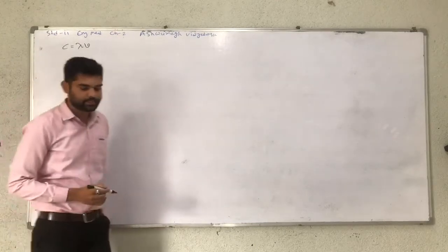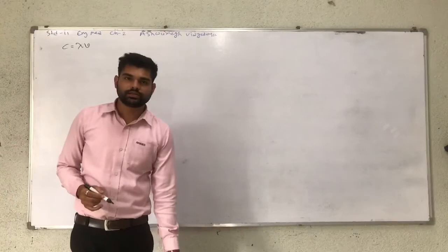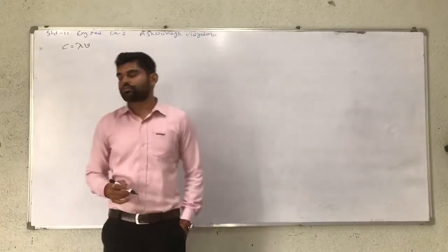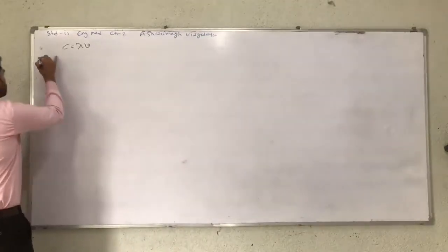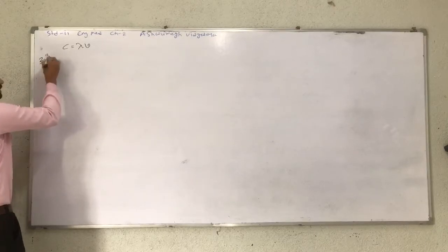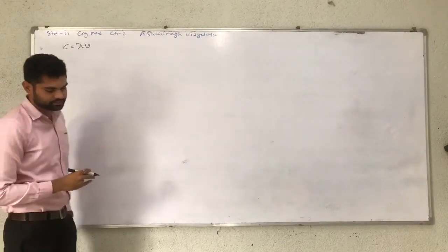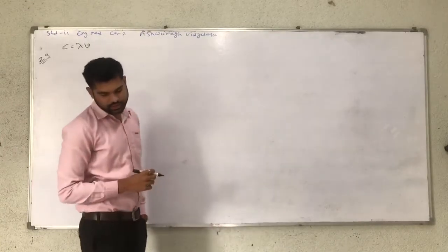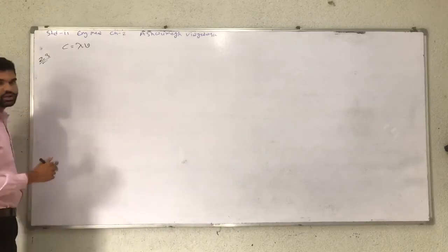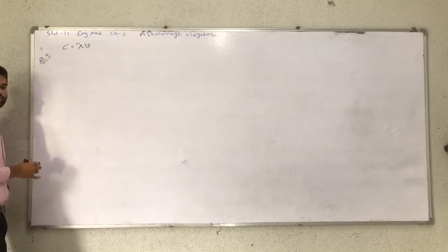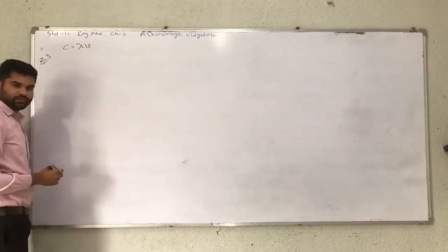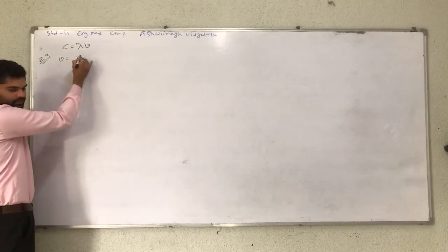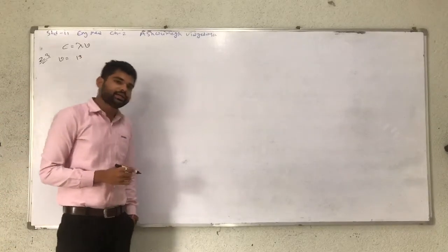Using this equation, we have to solve some examples. In our example 2.3, the frequency of a radio station is equal to 1368 kHz. Therefore, the value of mu is equal to 1368 kHz, because it is the frequency of the radio station.